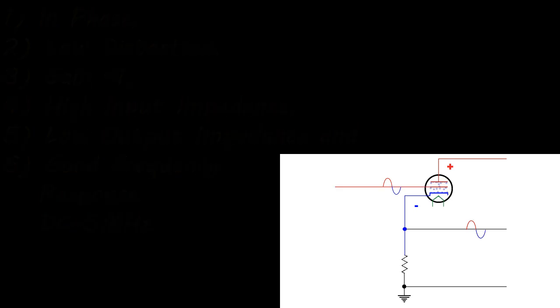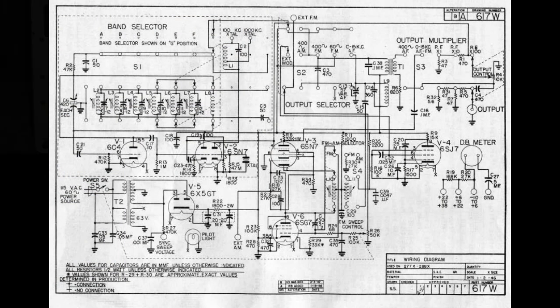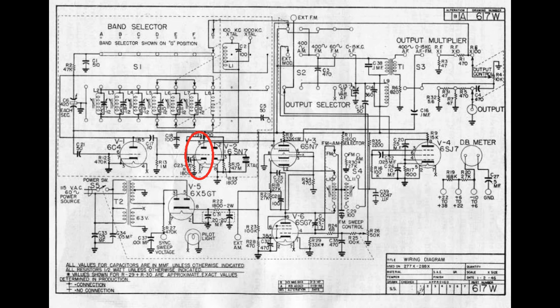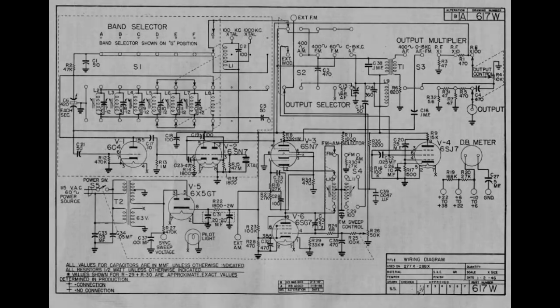Now I first ran into this circuit when I was reviewing the circuit diagram of a Hickok Model 288X RF generator, one of my future projects. Now the Hickok manual clearly described the circuit as a cathode follower. Now I just could not wrap my head around what the purpose of this cathode follower was in the RF generator.